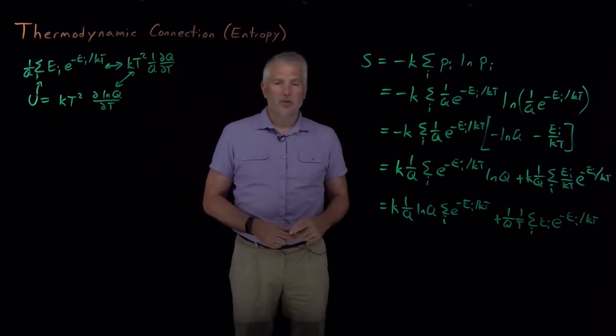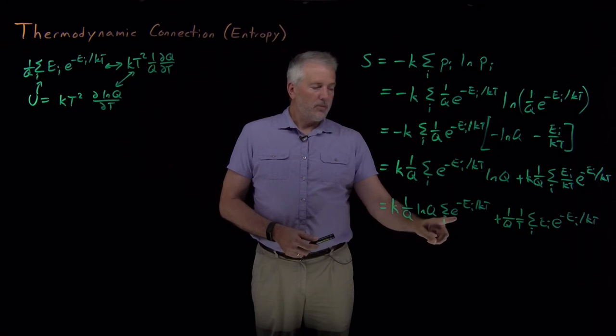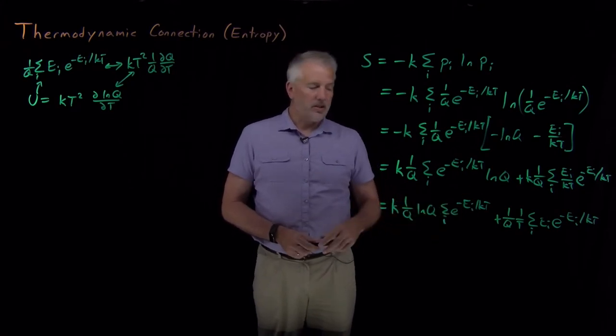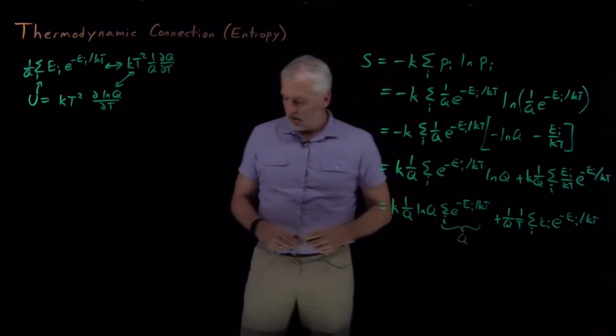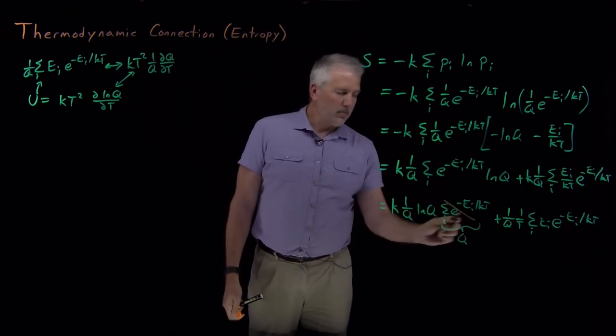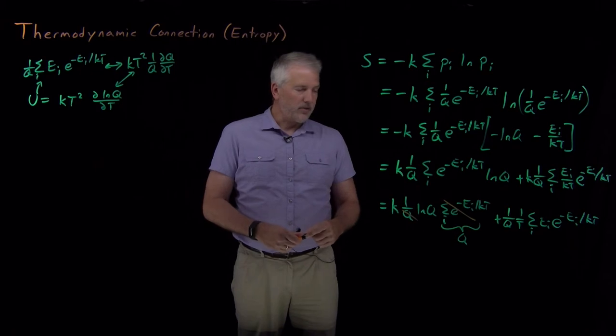So each of those terms now, we can do something useful with. Notice this sum, this is just a sum of Boltzmann factors. By definition, the sum of the Boltzmann factors is q. This quantity is q. So that q inside the sum will cancel this entire sum, which is equal to q. That'll cancel the q in the denominator right here, so that simplifies that first term quite a bit.